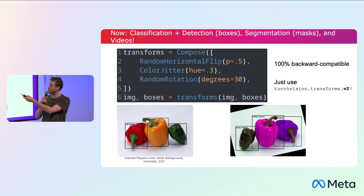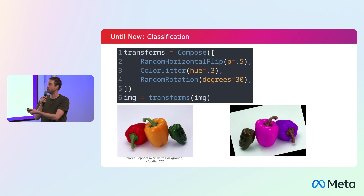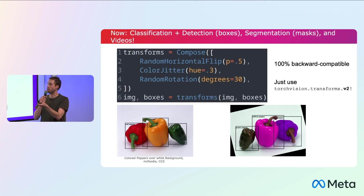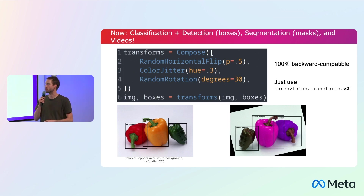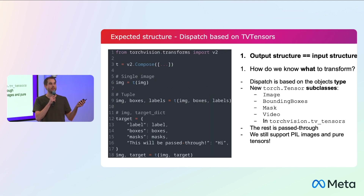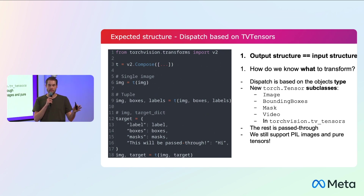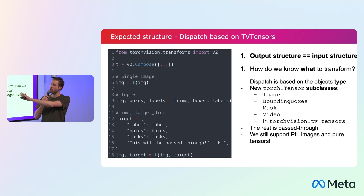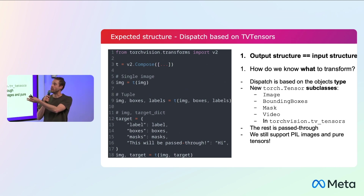These new transforms don't care what you pass them — they will just respect the structure of the input. So on line six, I'm passing an image and I get an image as output, just like before. On line nine, I'm passing a tuple of three things and I get exactly the same structure back. You can also do more complex stuff with nested structures.